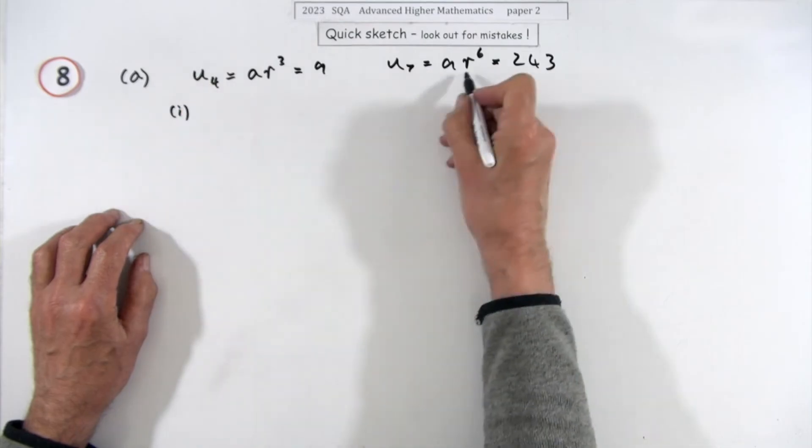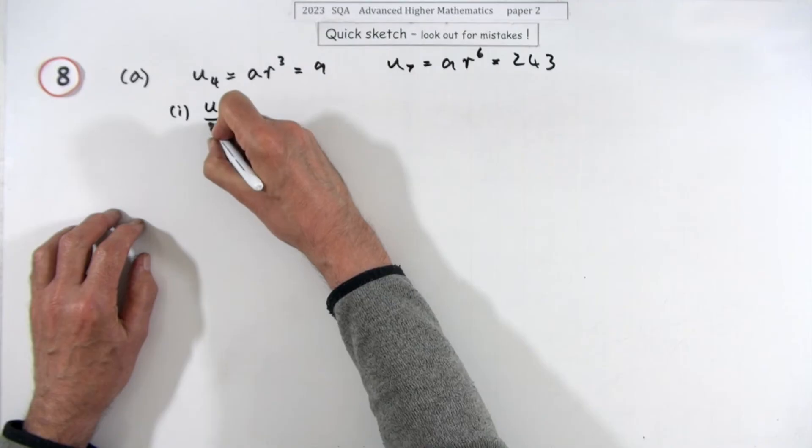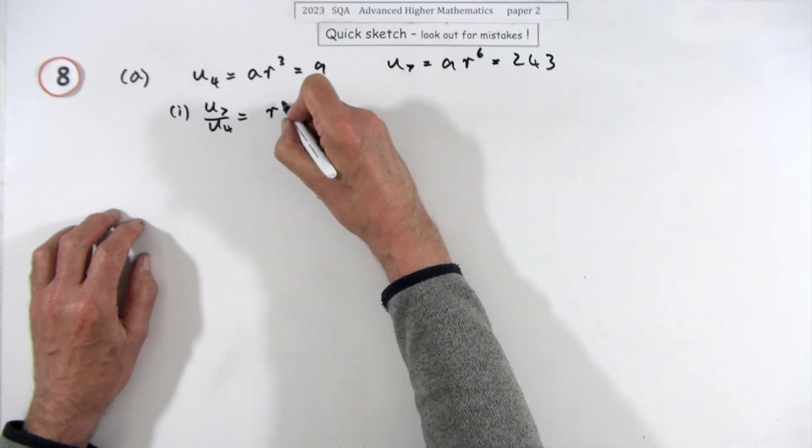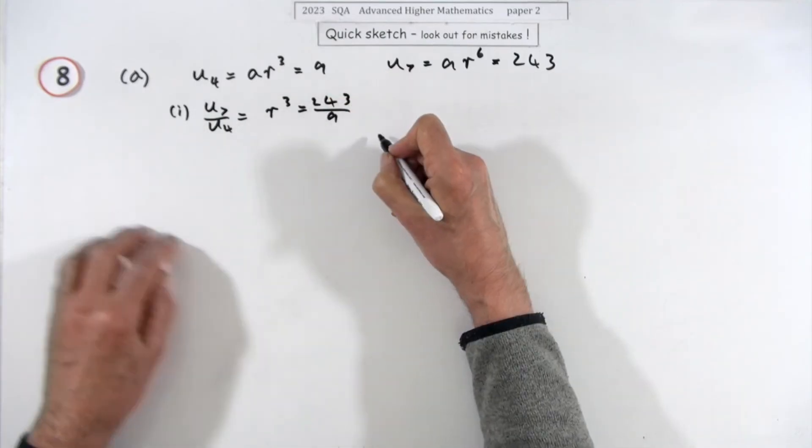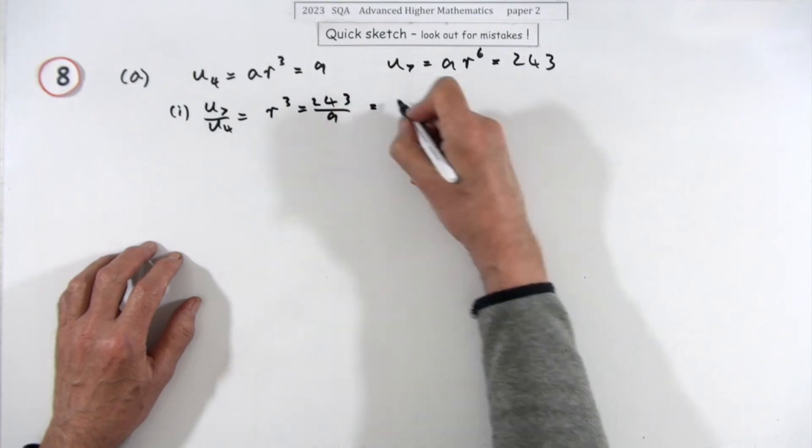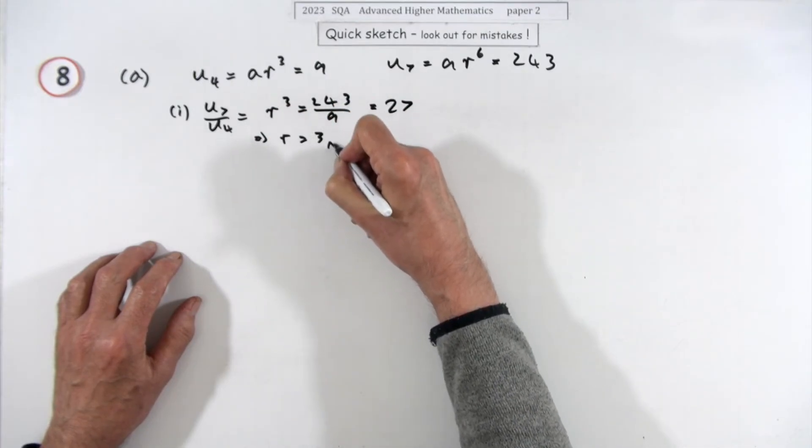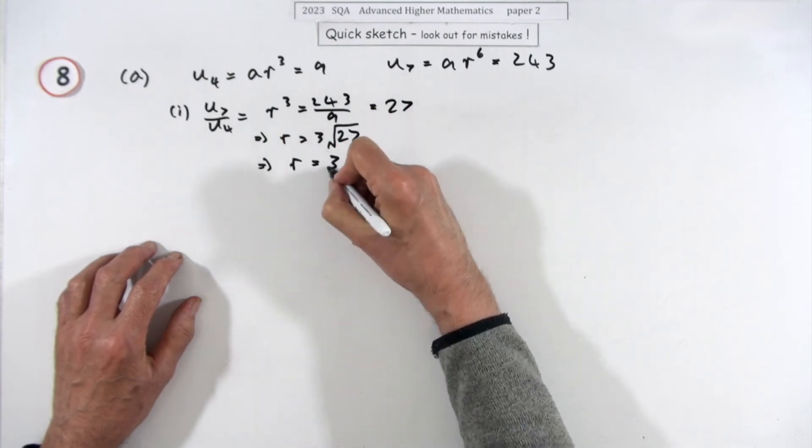Well, for the common ratio, if you have to divide them out, the a's would cancel. So if you did u7 divided by u4, the a's would cancel and you'd be left with r cubed, and that would be the 243 divided by 9, which is 27. So that tells you that r is the cube root of 27, so there's the first part: r is 3.